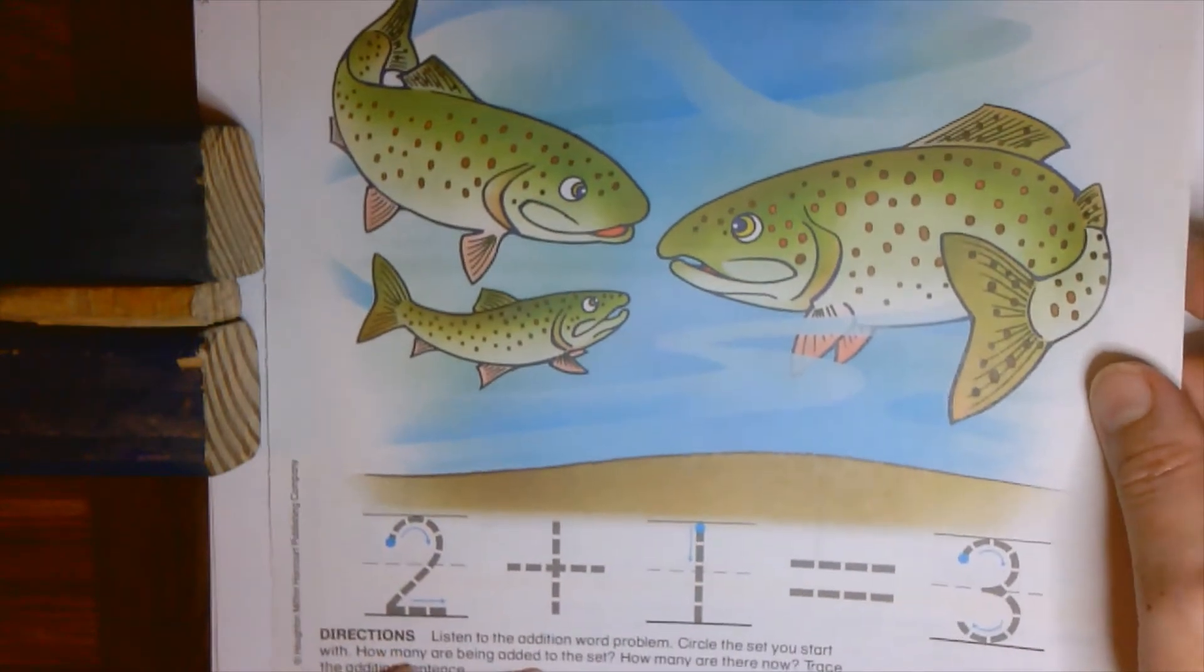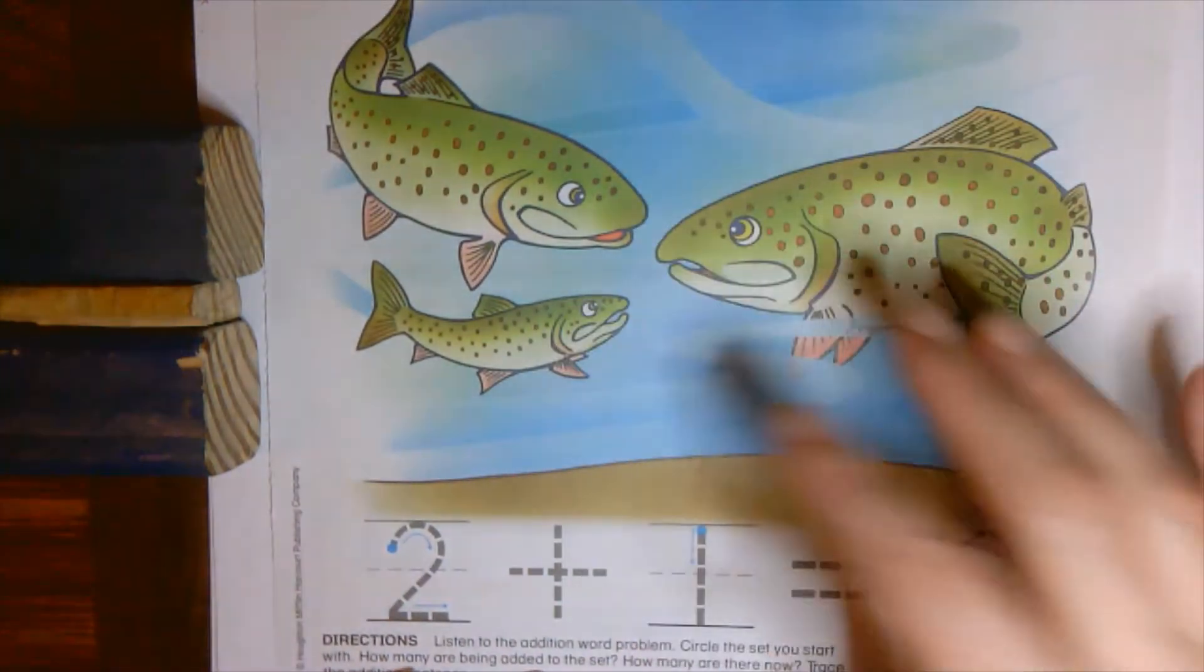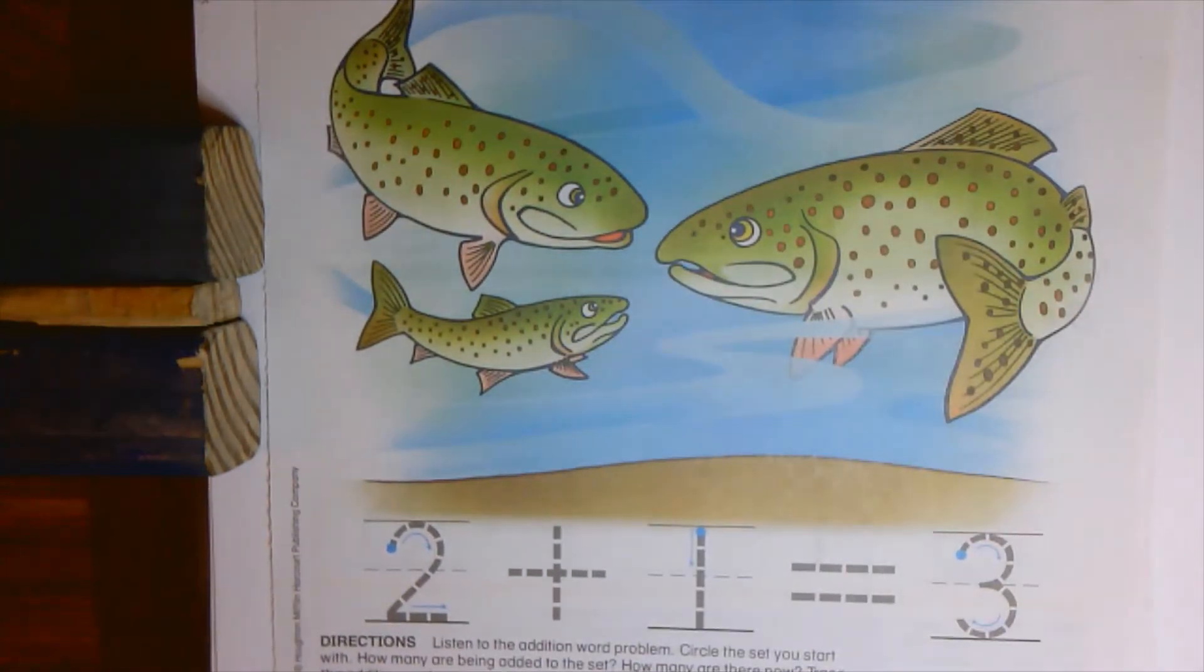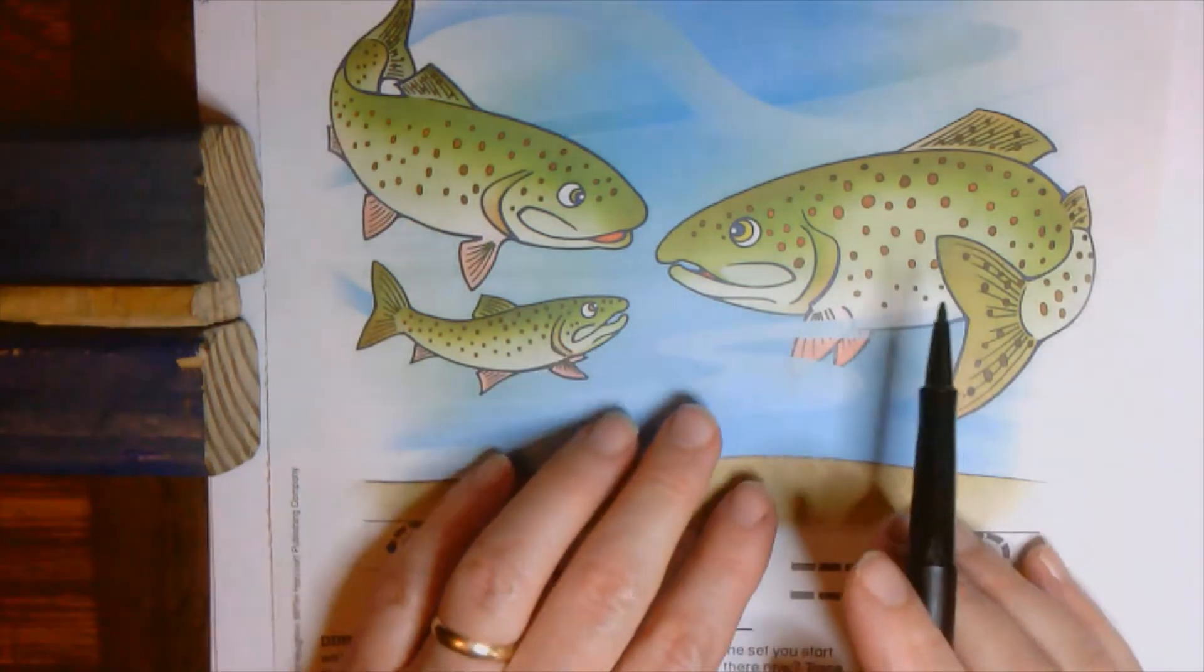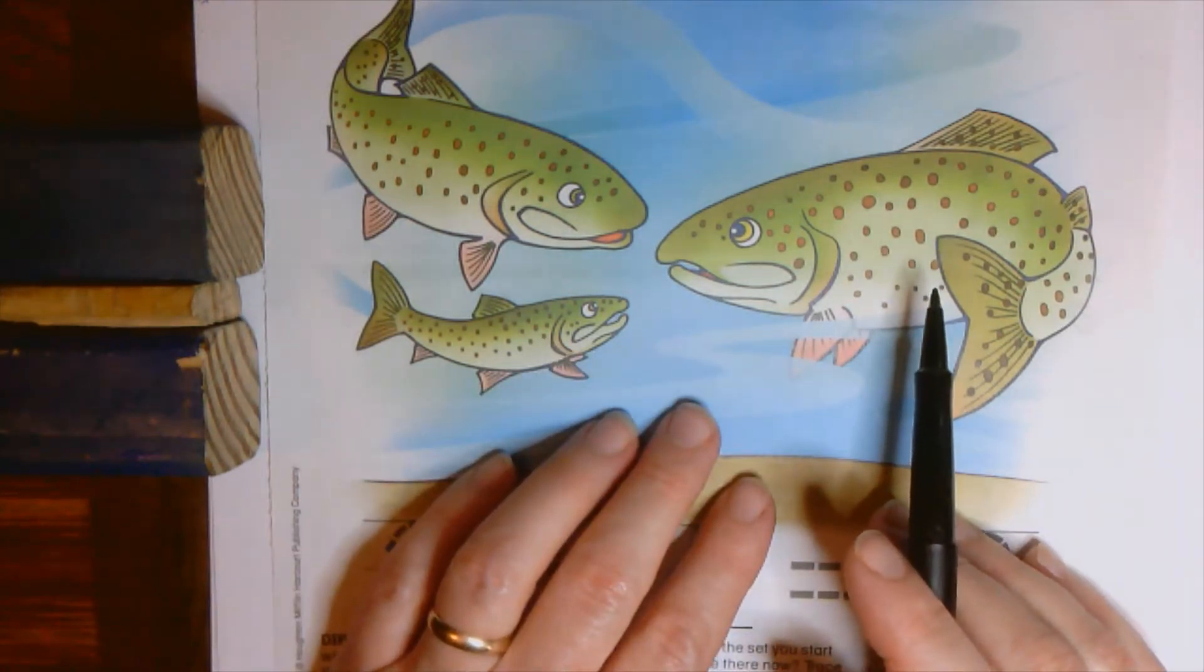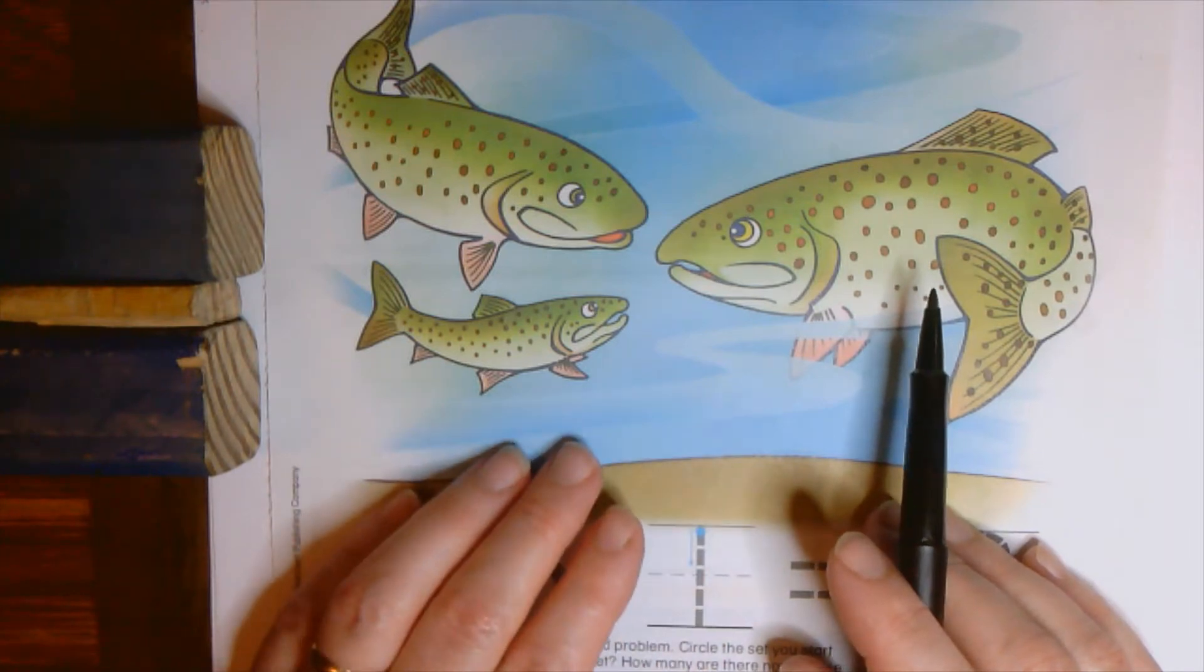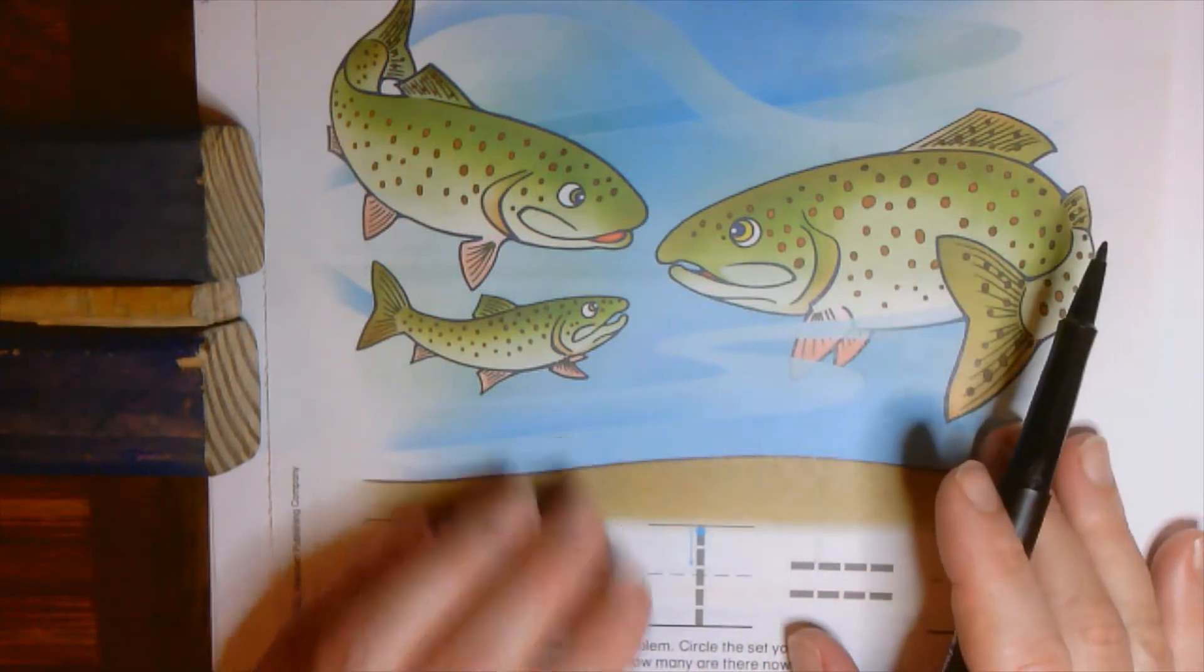So let's take a look here at this example. Do you see these fish? Circle the set you start with and how many are being added. That's actually going to be probably the hardest part with today, to figure out which ones they mean to be the ones that start out and which ones are getting added.